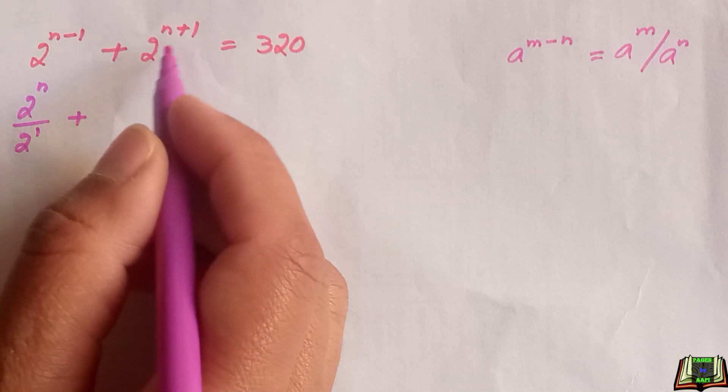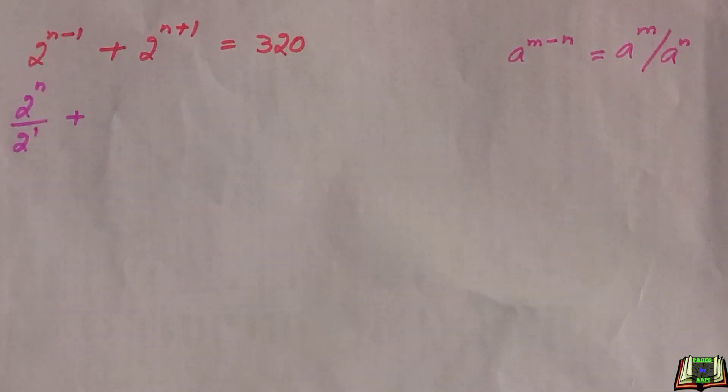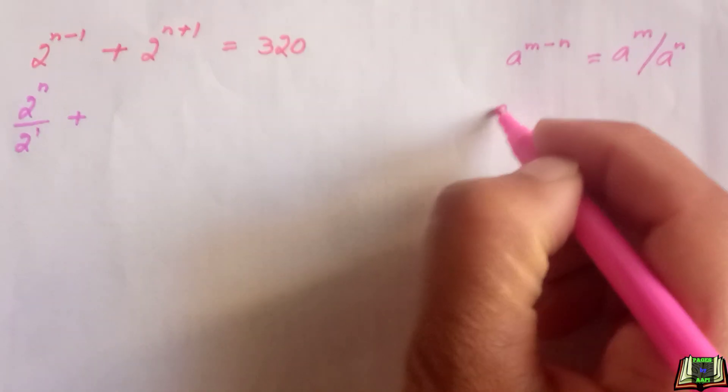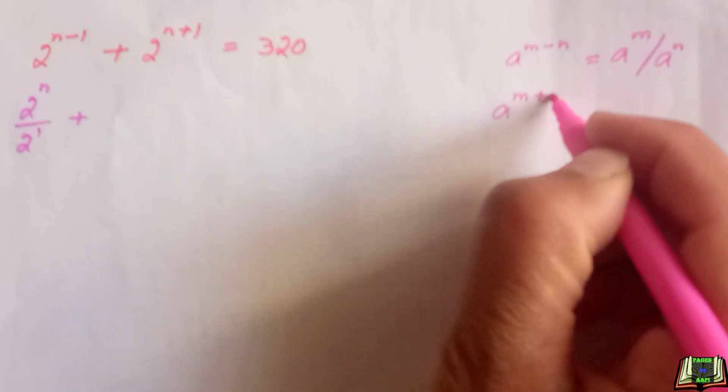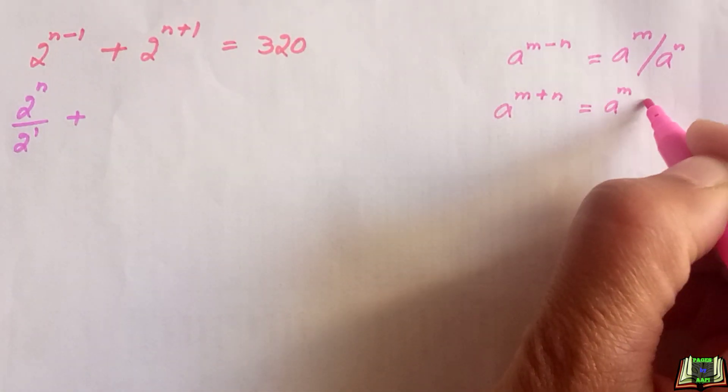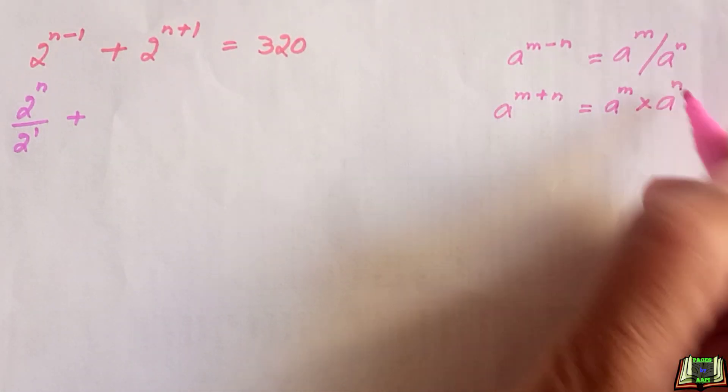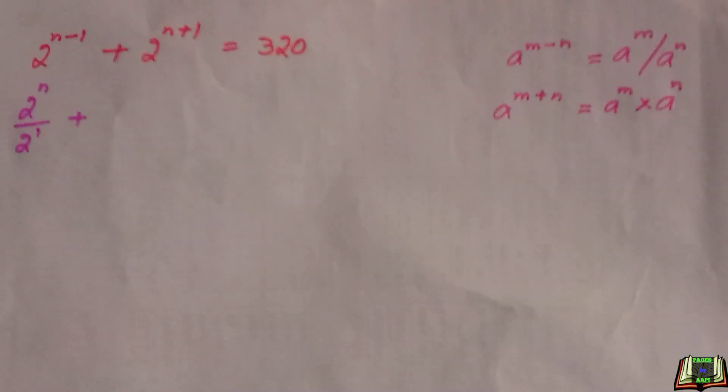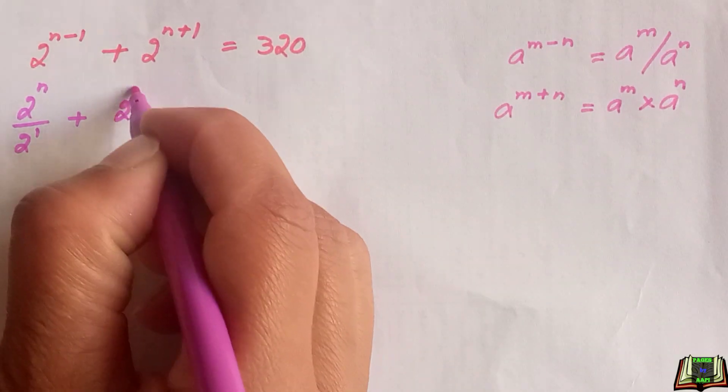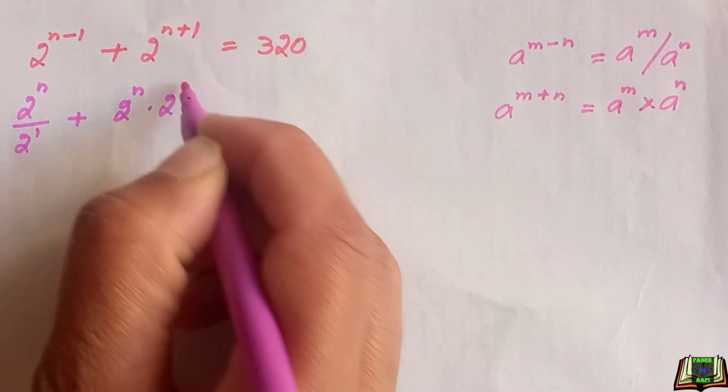For the second part, 2 raised to power n plus 1, we are going to use the product rule of powers that says if a raised to power m plus n, then this is equal to a raised to power m times a raised to power n. So this will be equal to 2 raised to power n times 2 raised to power 1.